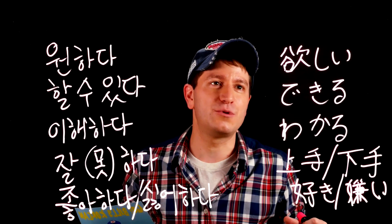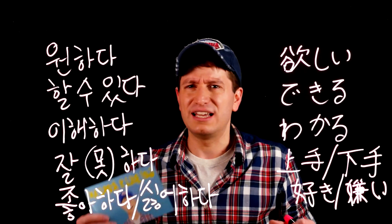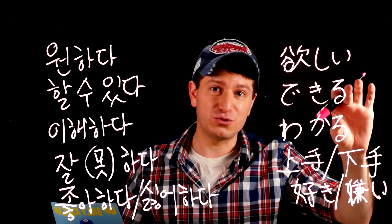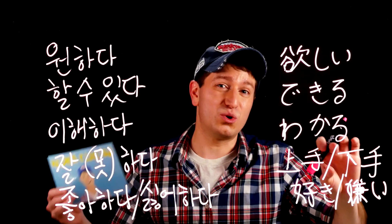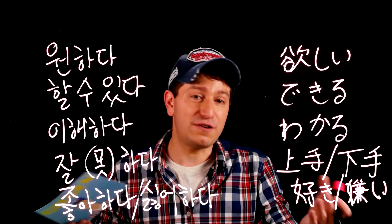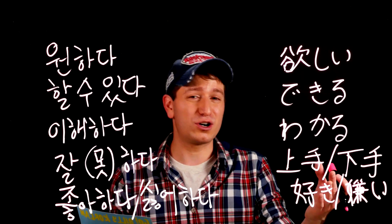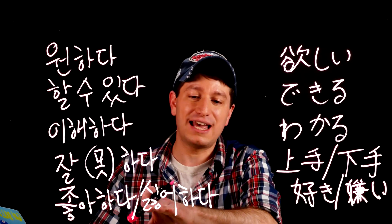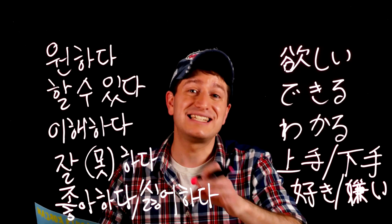A lot of things in Japanese use the subject marker が, whereas in Korean they use the object marker. Things like 欲しい — things you want — in Korean would just be 원하다. Things you can do, 出来る, in Korean 할 수 있다. Understanding, わかる, in Korean 이해하다. Being good or bad at something, 得意 or 苦手, in Korean 잘하다 or 잘 못하다. And finally things you like or dislike, 好き and 嫌い — in Japanese these use the subject marker, whereas in Korean you'd typically use the object marker with the active verbs 좋아하다 and 싫어하다, although you also have the option of using subject markers with 좋다 and 싫다.